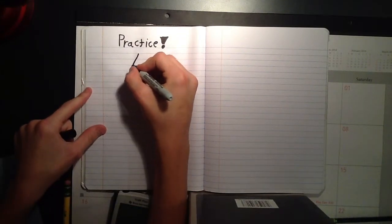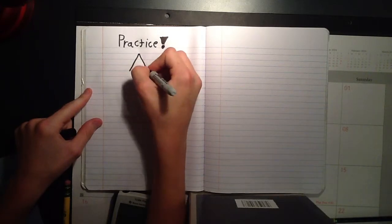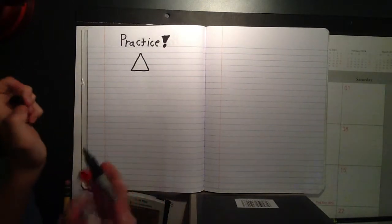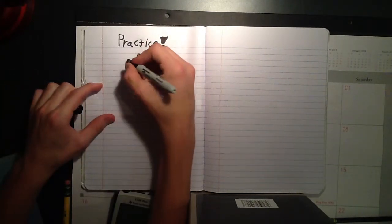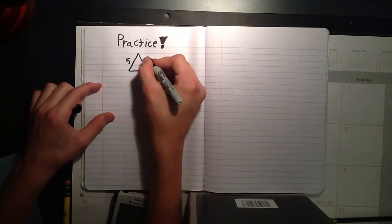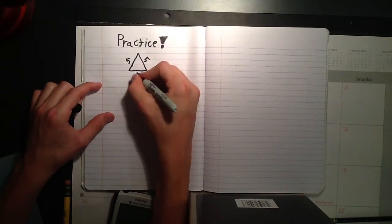And for this first practice, we're just going to pretend that we're using an equilateral triangle. Let's just say that's equilateral, even though that looks a bit scalene. And we're going to put each of these lengths as five.